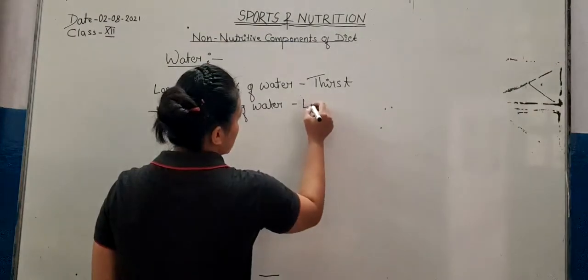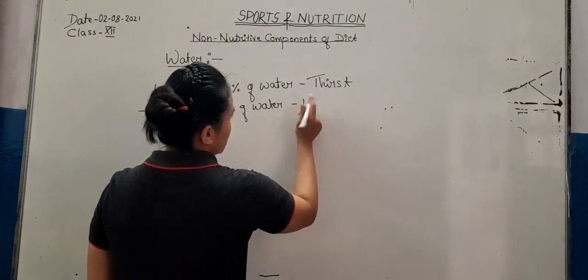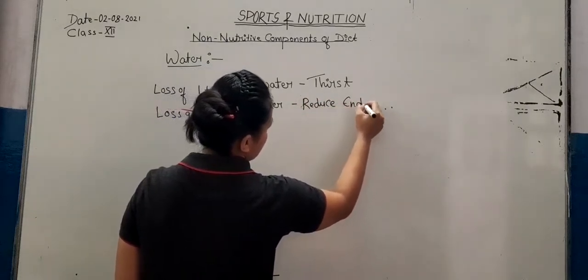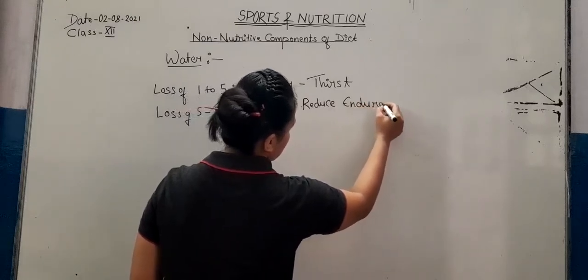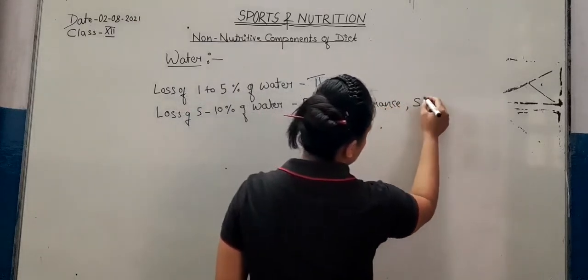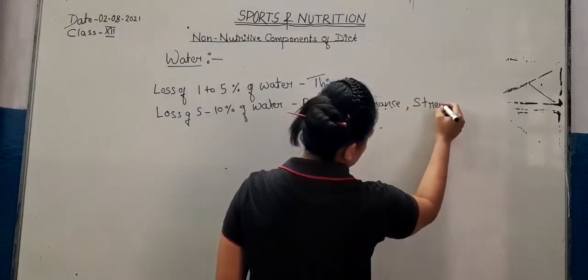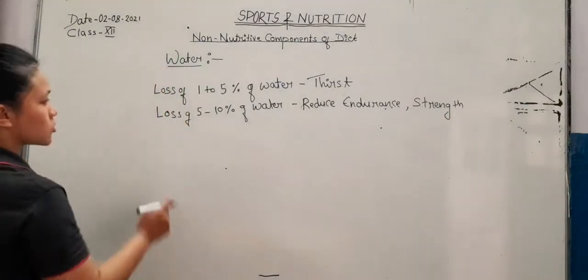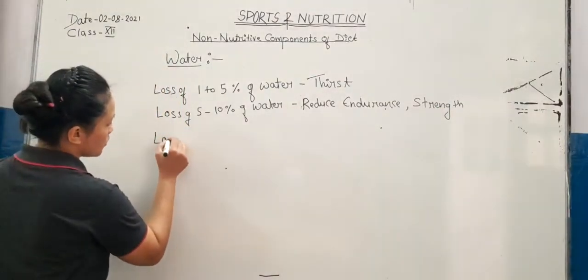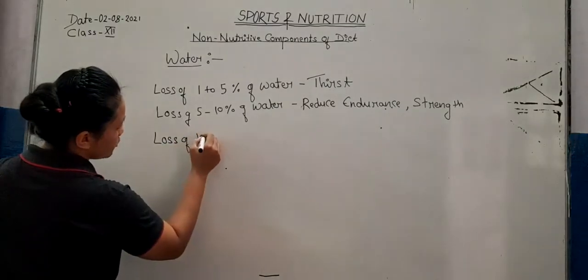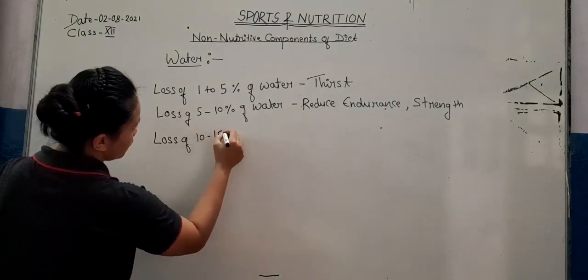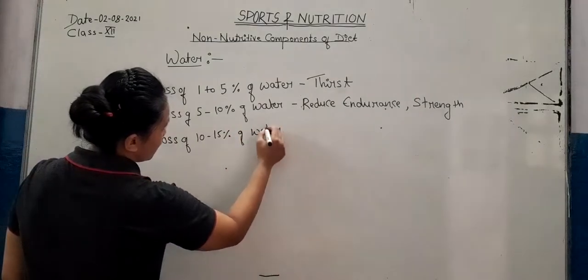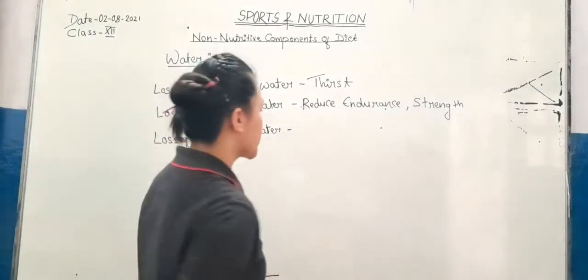If there is a loss of 5 to 10 percent of water from our body, it leads to reduced endurance and reduced strength. And if there is a loss of 10 to 15 percent of water, it leads to dehydration.